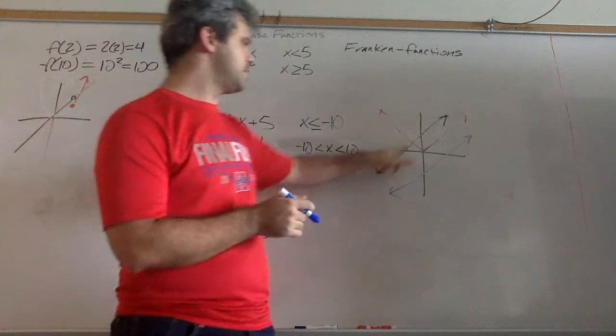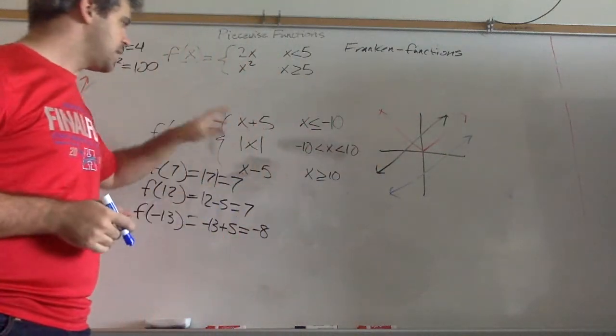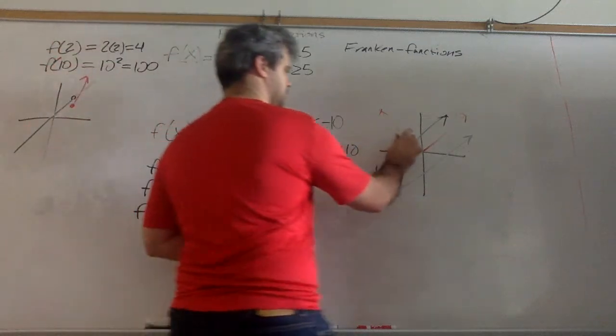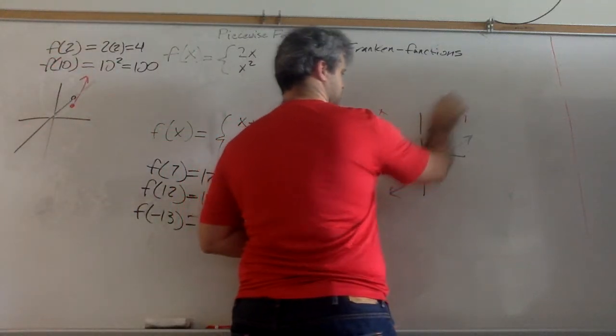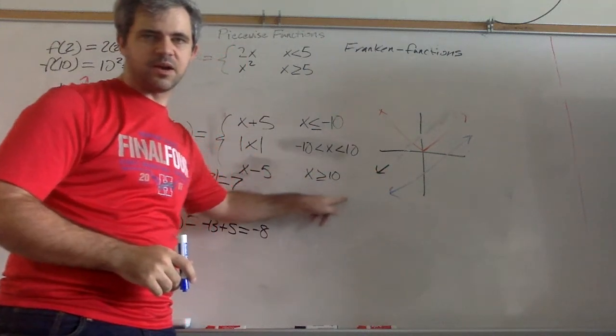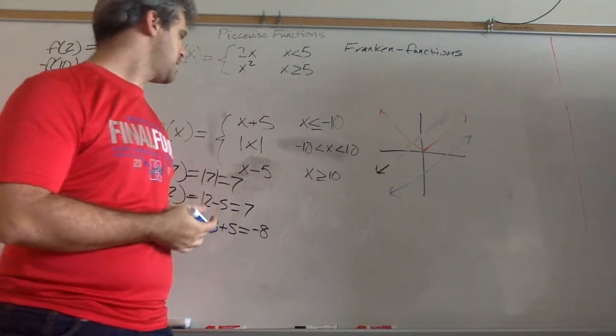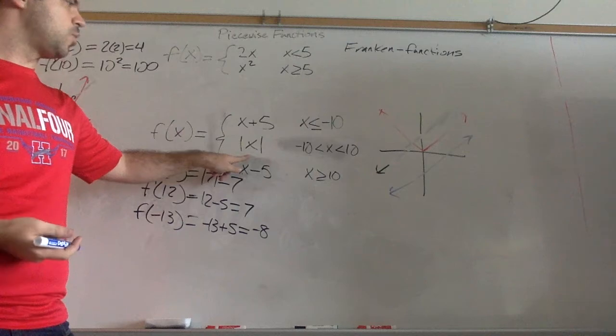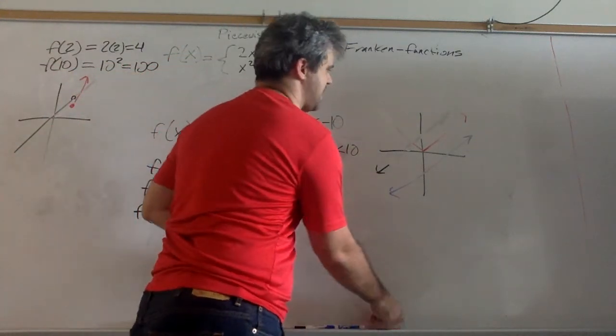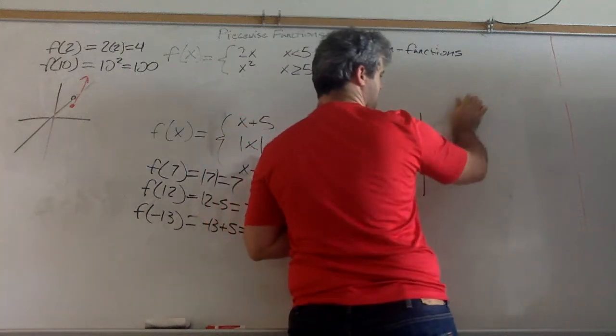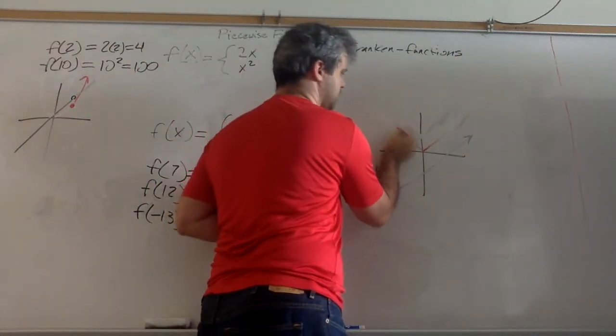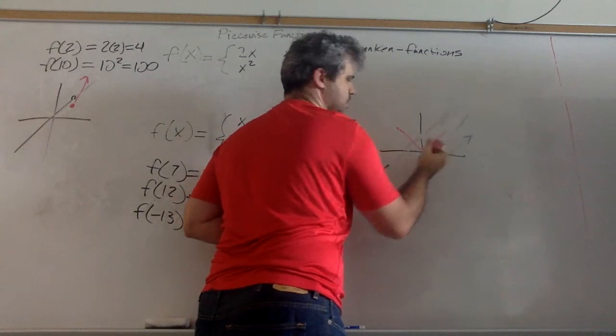So this first one, this black line, we're going to use this when x is less than negative 10. So we're only going to use it from here and beyond. This absolute value, we're only going to use this between negative 10 and positive 10. So we're only going to use it in this little section right here.